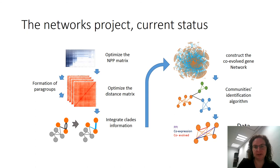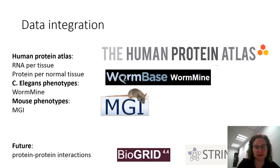To review: we started with optimizing the NPP matrix, moved on to optimize the distance matrix and integrate different clades into a single piece of information, dealt with paralogs, constructed the co-evolution network, and identified communities. Now we are at the data integration stage, using protein-protein interactions, co-expression, and co-evolution to find new pathways. We are currently using the Human Protein Atlas for RNA and protein data, WormBase for the nematode, MGI for mouse phenotypes, and protein-protein interactions from STRING and BioGRID.